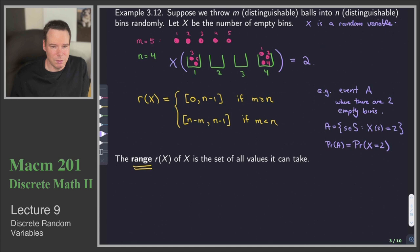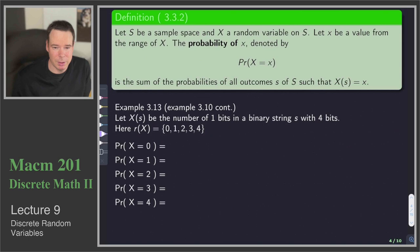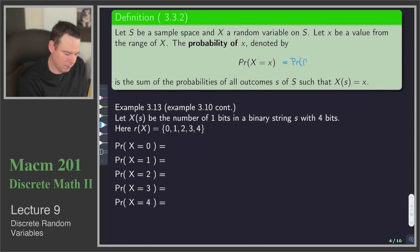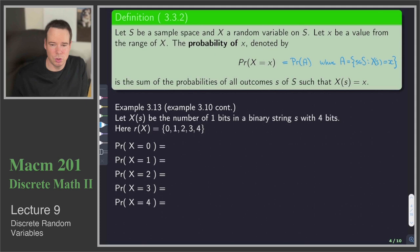Here is the formal definition. If S is a sample space, X is a random variable on S, and little x is a value in the range of X, then the probability of little x occurring is denoted P(X = x). That's just the sum of the probabilities of all the outcomes in S that have value x — it's shorthand for the probability of the event A, where A is the set of all elements in the sample space with value little x.